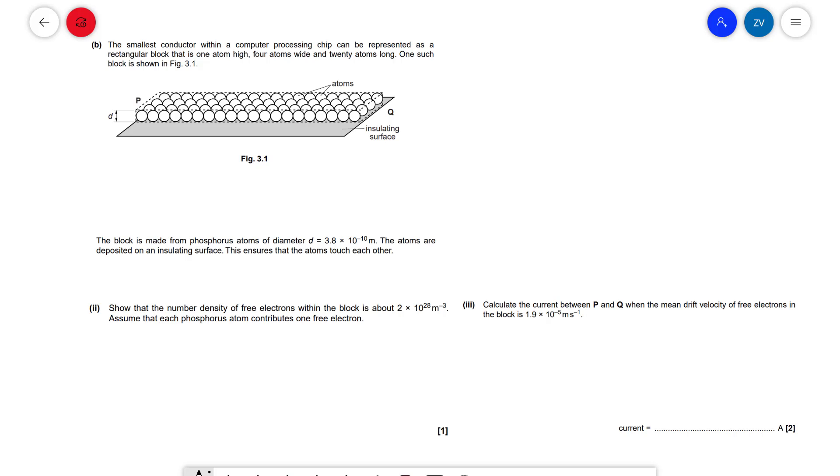So the smallest conductor within a computer processing chip can be represented as a rectangular block. We're assuming that this is just a rectangular block. There is one atom high, that's pretty small, four atoms wide and 20 atoms long. One such block is shown in the figure below.